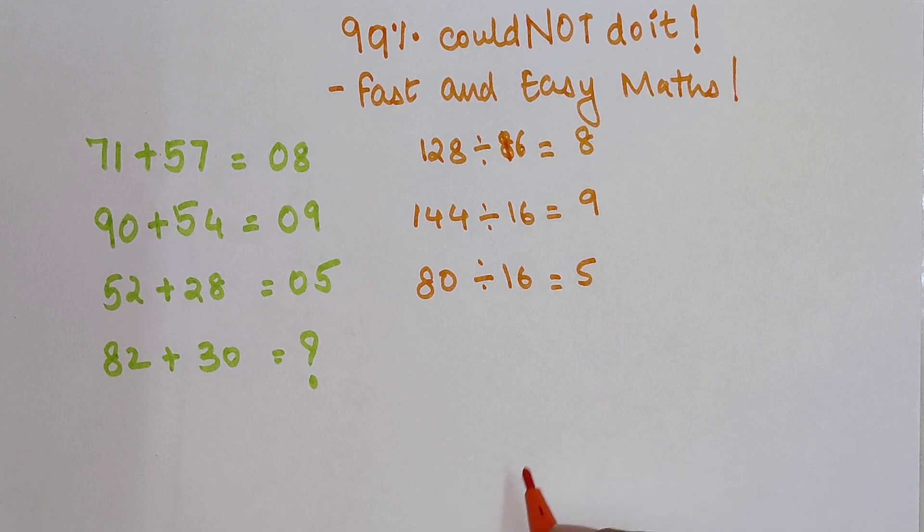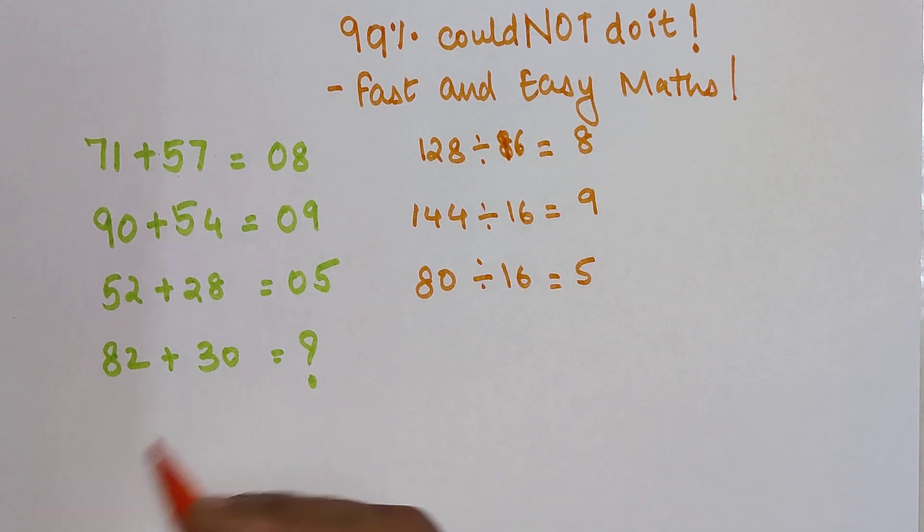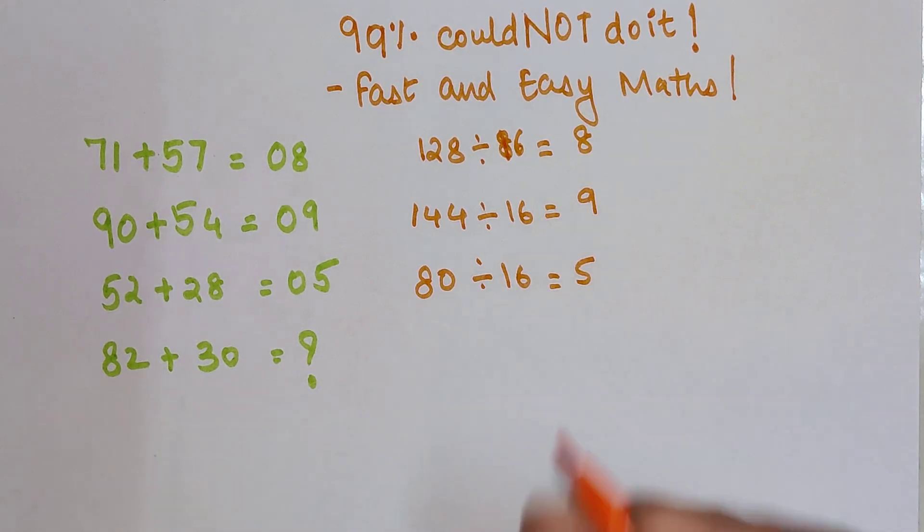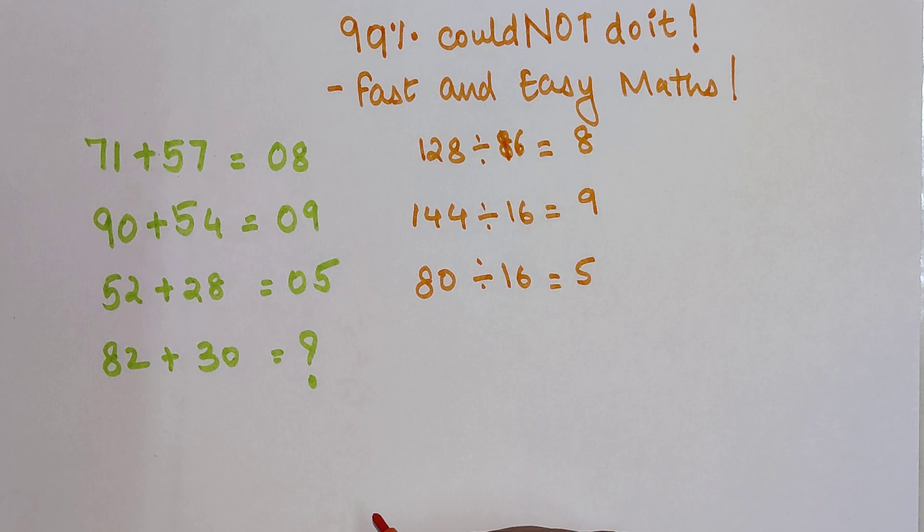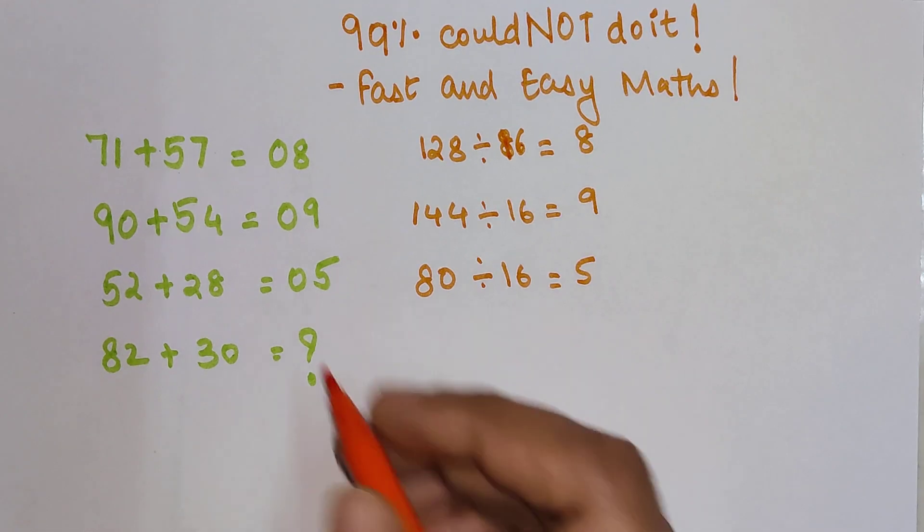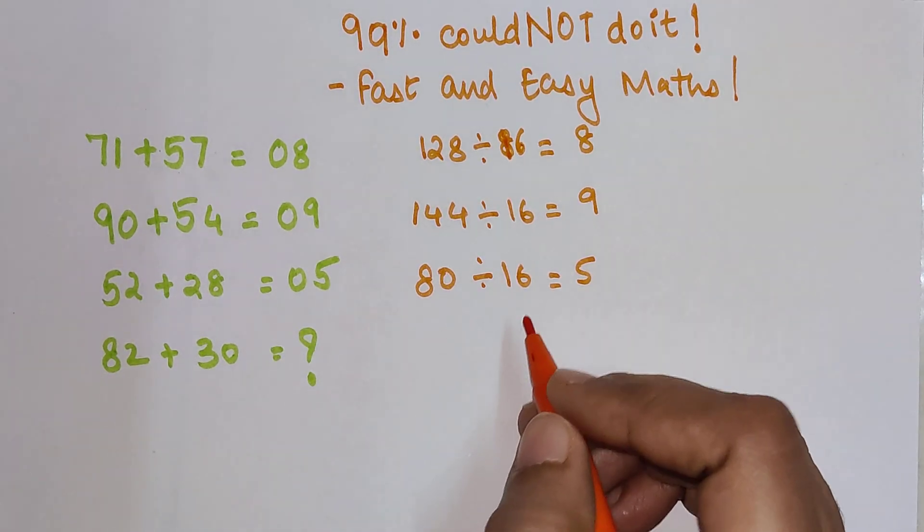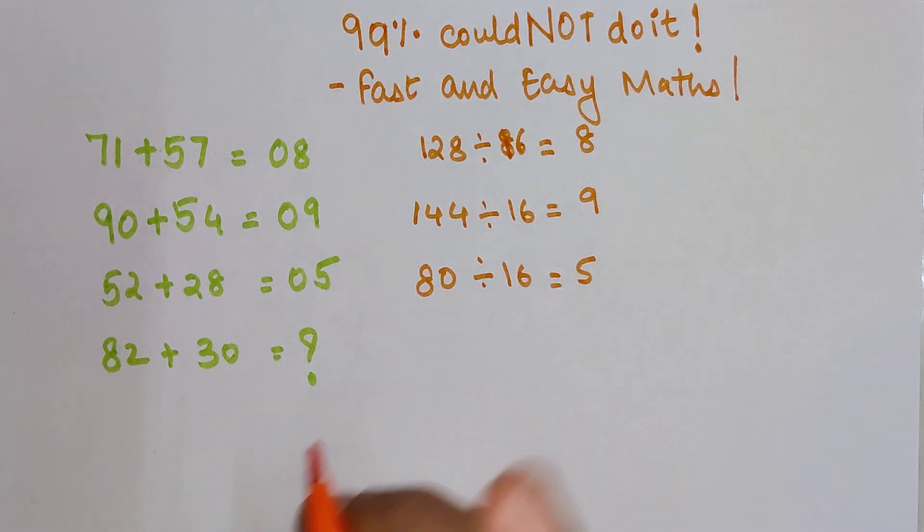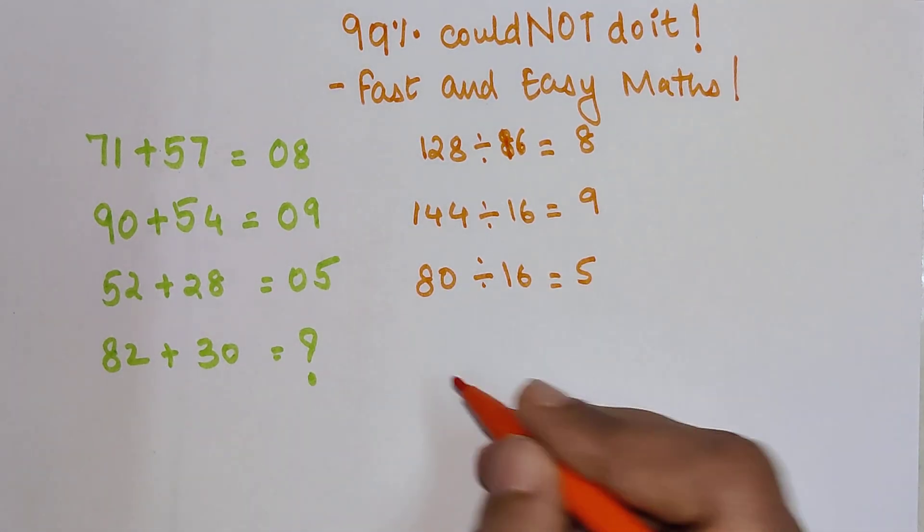So you see that basically what you need to do is you just need to add all of them, and then you divide it by 16 to get to your answer. Students, don't forget right now I will put a DIY question as well. But before going ahead, please give a like and subscribe to my channel.